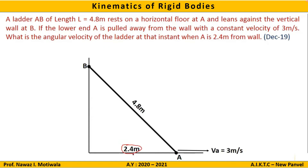Now let us start with the solution. The first step in any kinematics of rigid bodies problem is to locate the ICR. To locate ICR, draw perpendiculars from all points on the body — wherever they meet is your ICR. Since point A is shifting to the right, its velocity is in that horizontal direction. As A moves right, B will come down, so its velocity VB is directed downward.